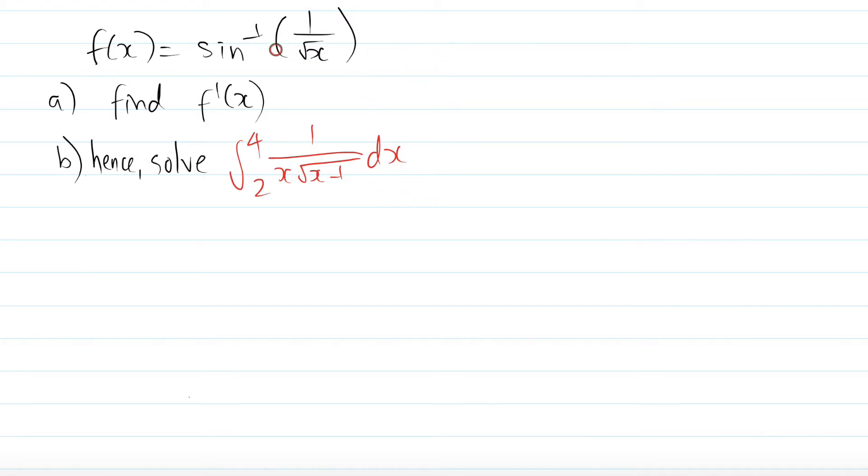So this question involves a function where there are two parts. First part is you derive that function. And then the second part is using your answer to the first part, you have to anti-derive something which you normally wouldn't be able to anti-derive. So it's a really good question that we have to know how to do. I'll show you how this works and hopefully you can understand.